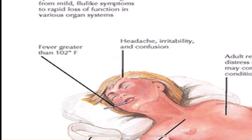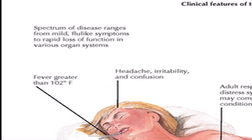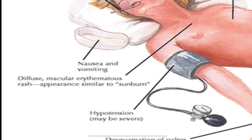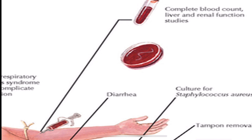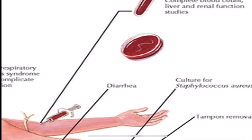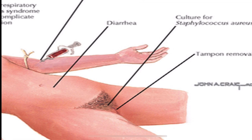The clinical picture includes fever over 38.9°C (102°F), headache, irritability, confusion, nausea, vomiting, macular erythematous rash, hypotension, desquamation of the palms and soles, and diarrhea. Platelet count falls, and liver and renal function studies show enzyme levels raised twice the normal value. Culture for Staphylococcus aureus should be done, and the tampon should be immediately removed.